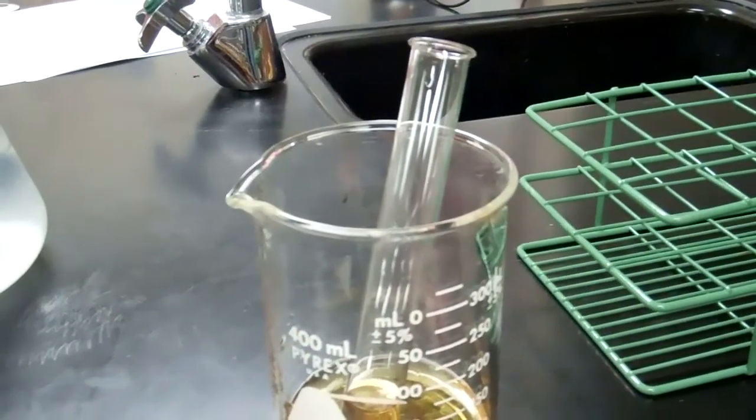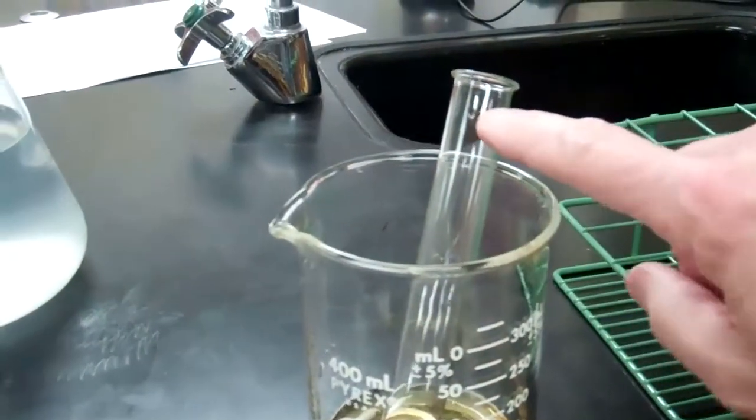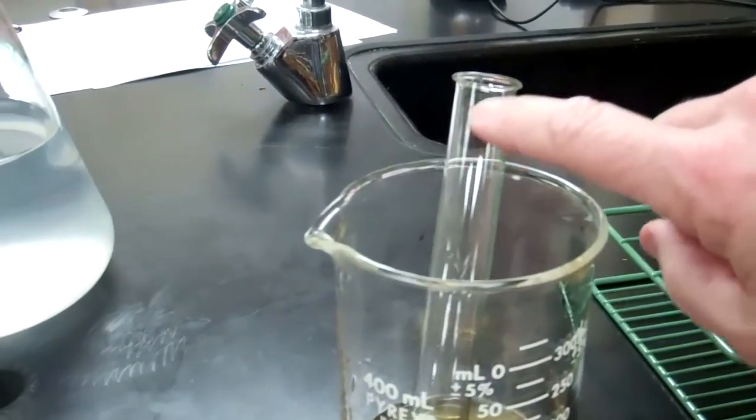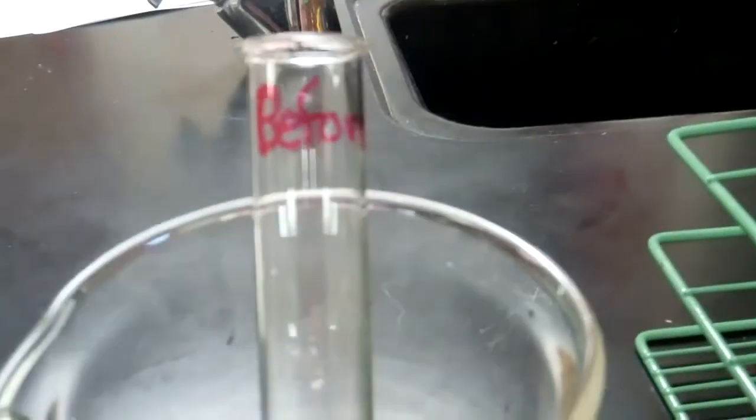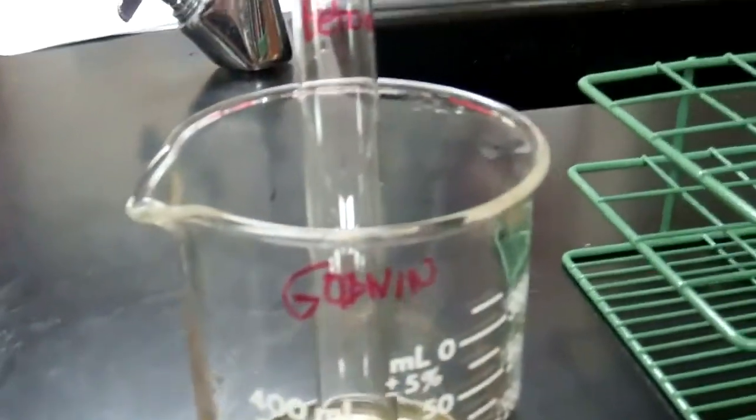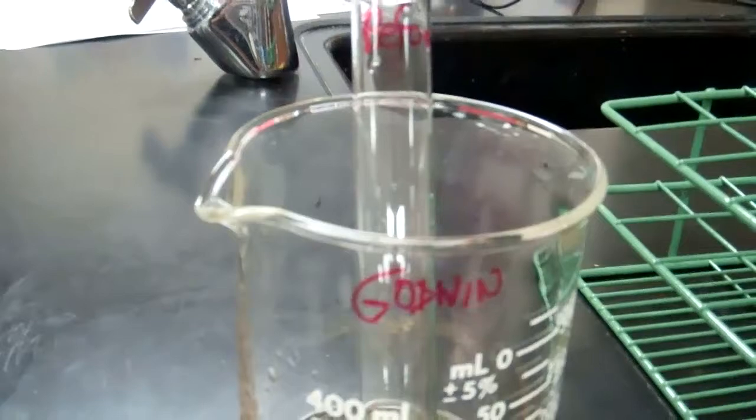Before you move on, you need to write the word BEFORE on this test tube, right here with a Sharpie. So I wrote it with Sharpie up at the top: Before. I have my name on the beaker, wrote it with my Sharpie.